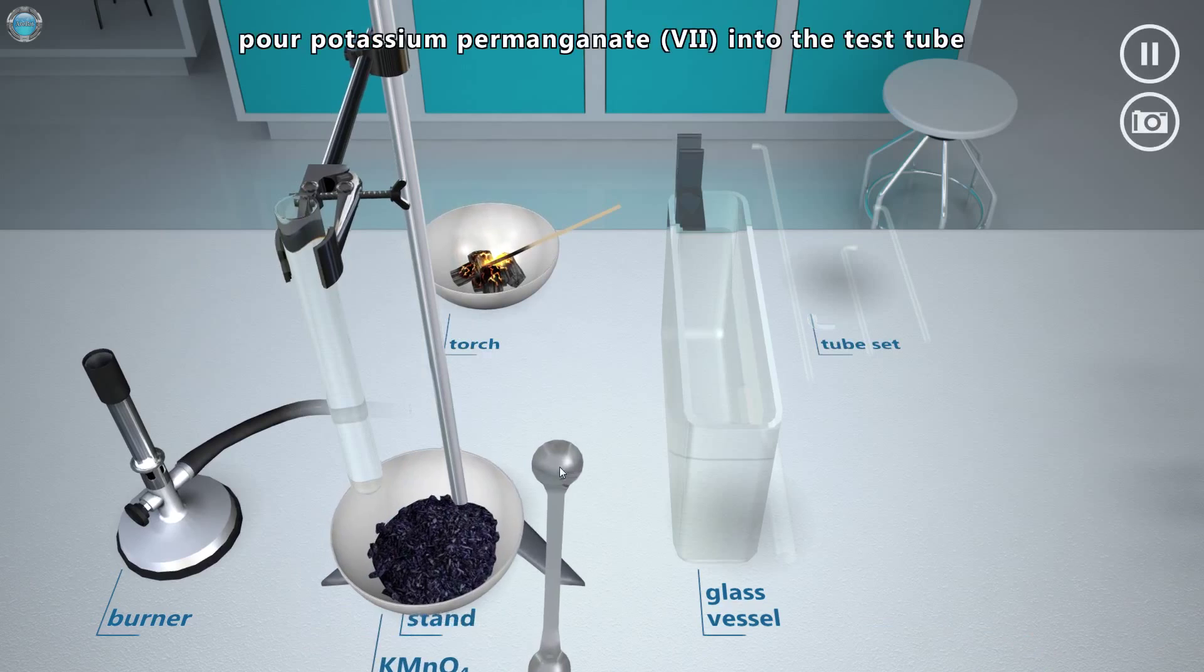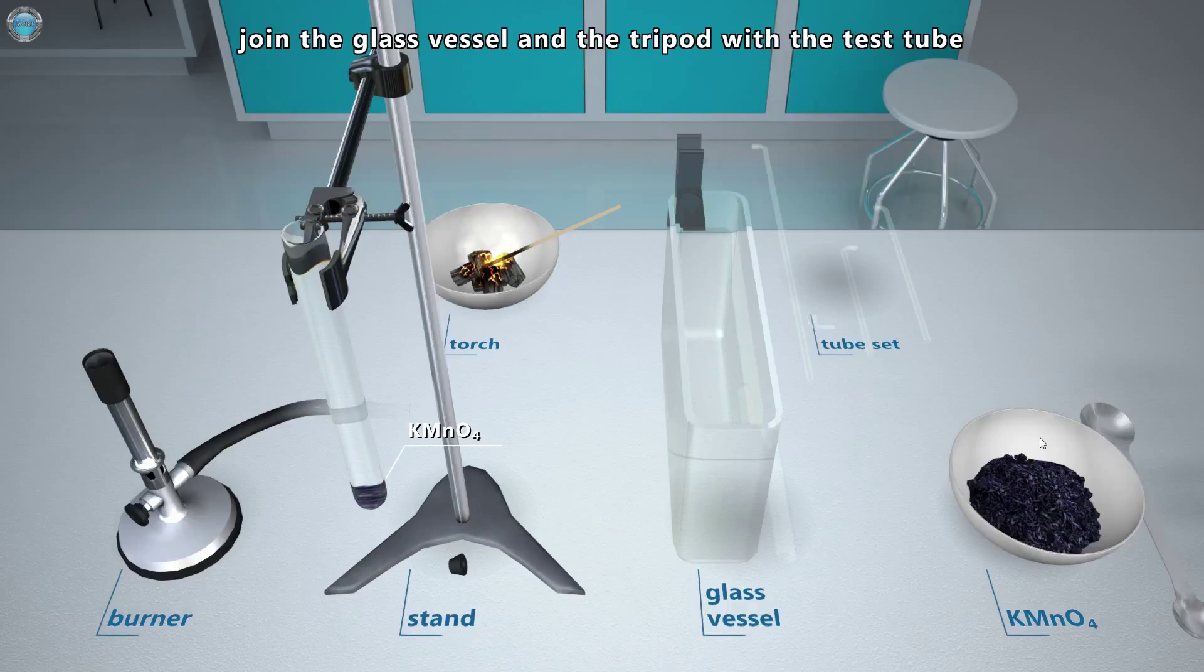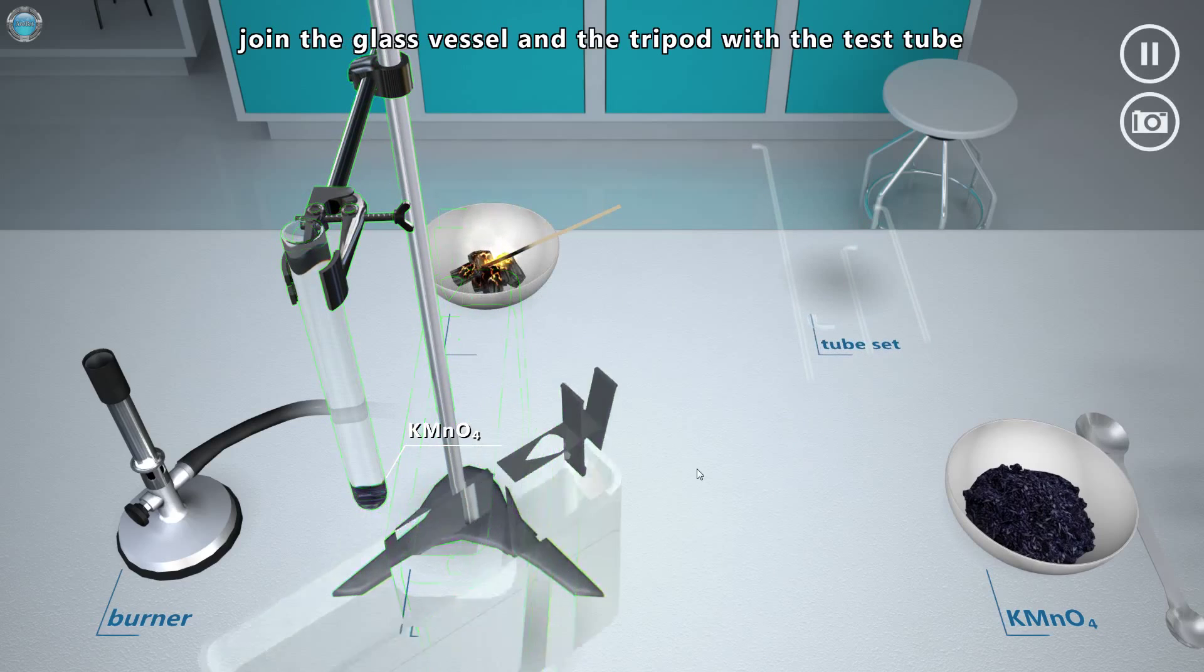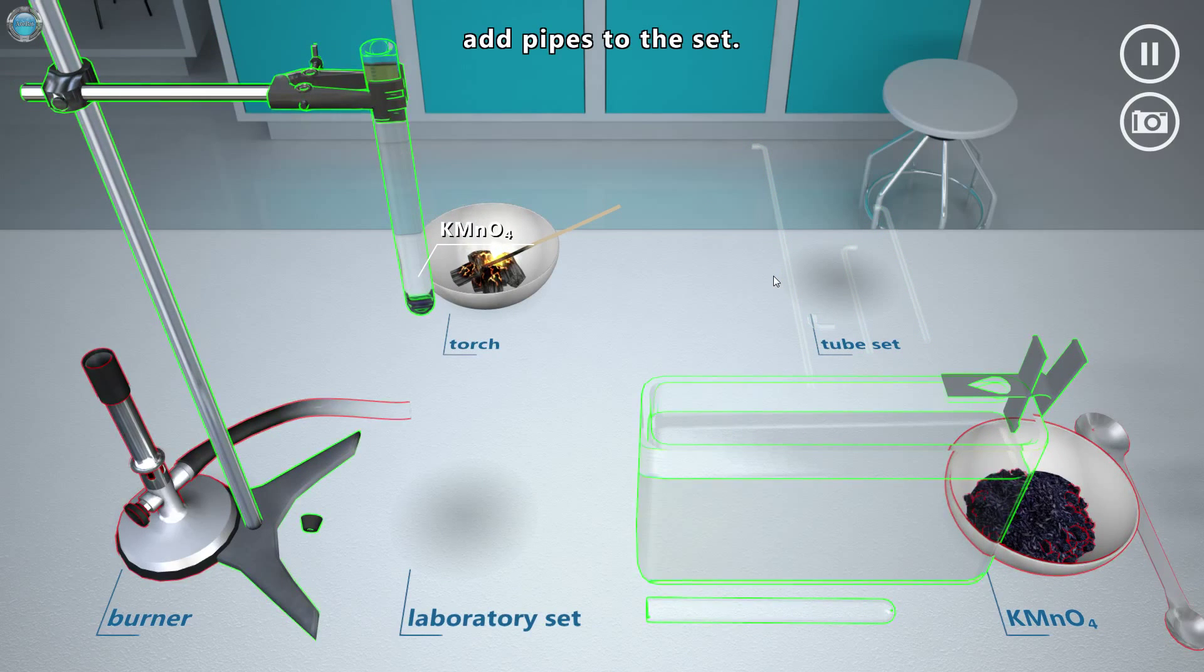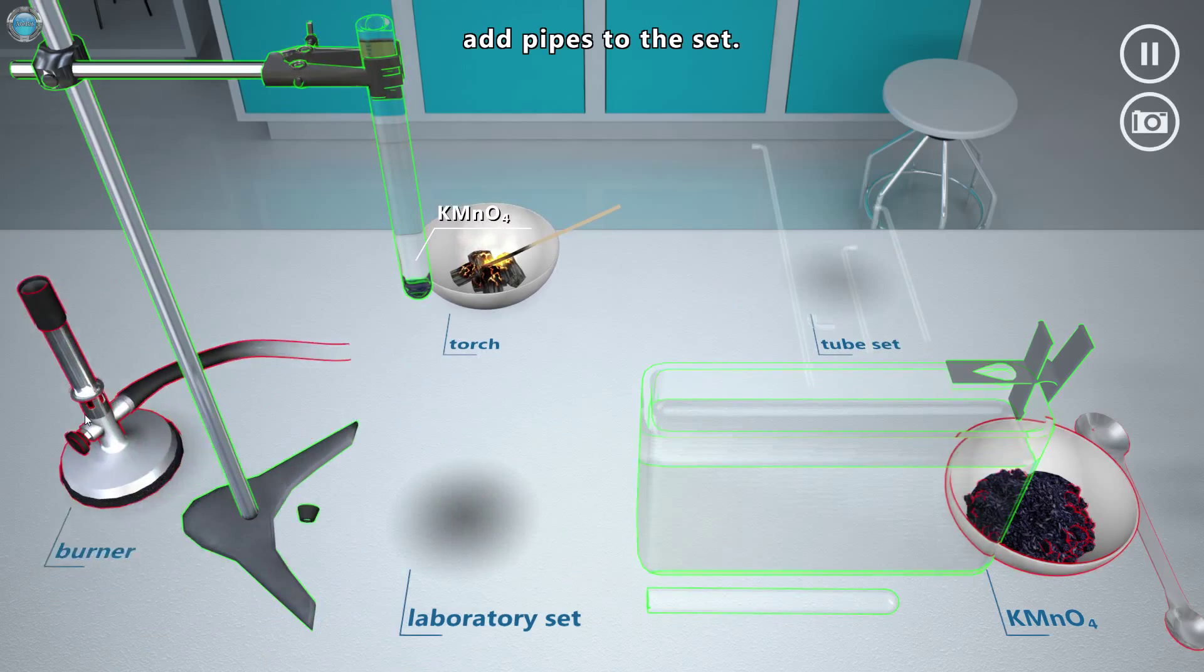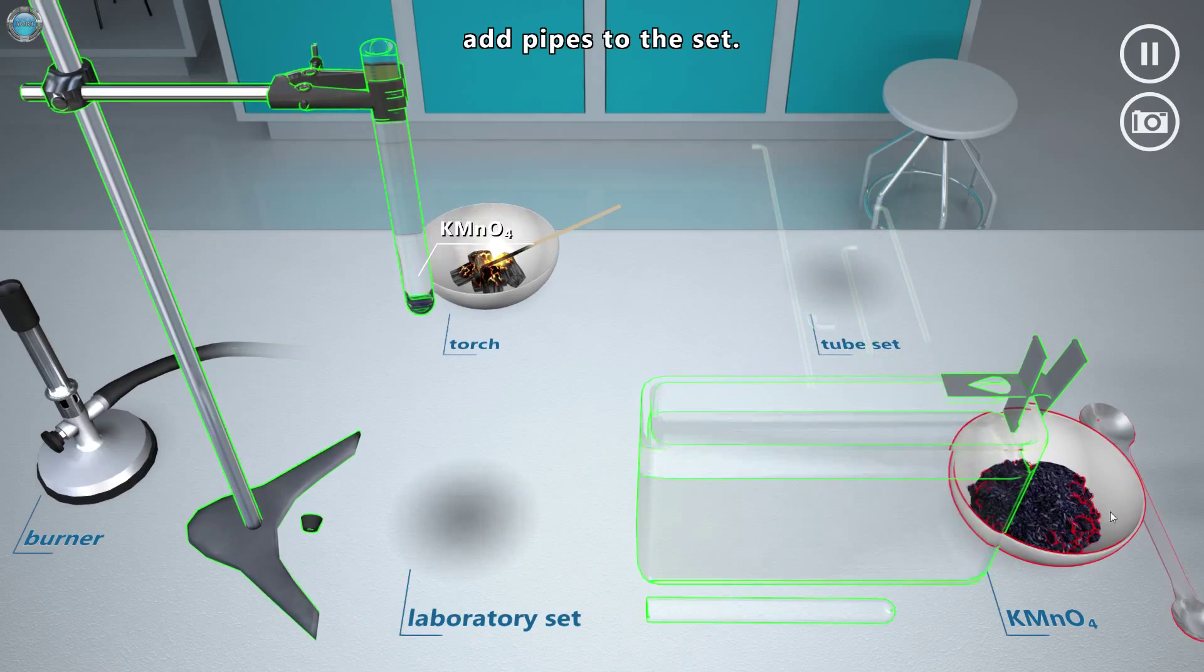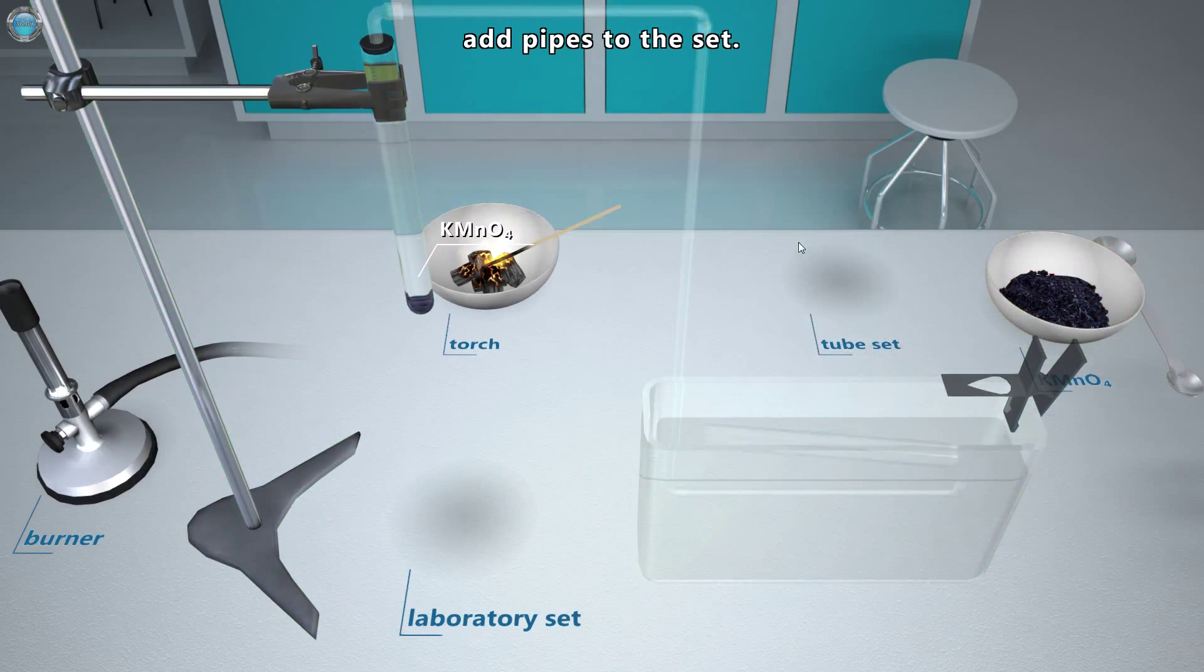In this experiment we will use a stand with a test tube and bung, potassium permanganate, burner, glass vessel with a tube, a set of pipes and a torch. Pour several crystals of potassium permanganate into the test tube. The test tube is in here. So I'm just gonna do that. Just a smidgen okay. Now we will build the set to run this experiment. To do that join the glass vessel and the stand with the test tube. Don't you think you should do it a different way? Oh there we go add pipes to the set. This is super strange. And that's the burner at the bottom here. What do we need to add the pipes? The table is so small. There we go. Now add burner.